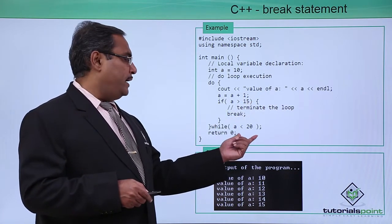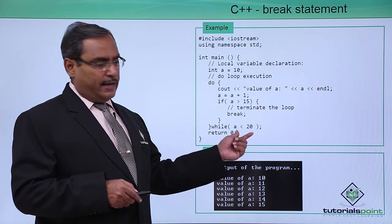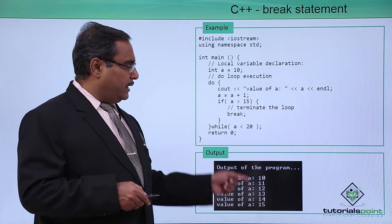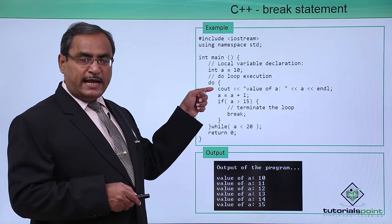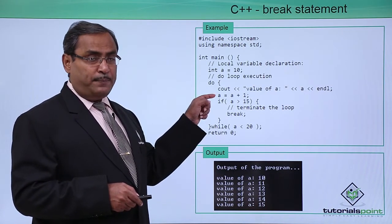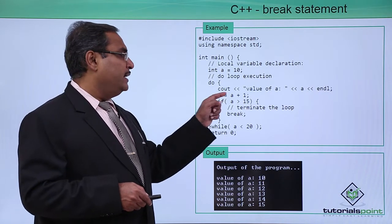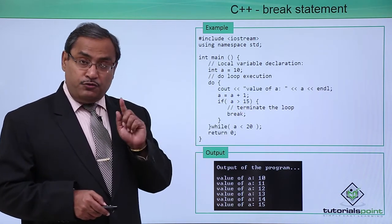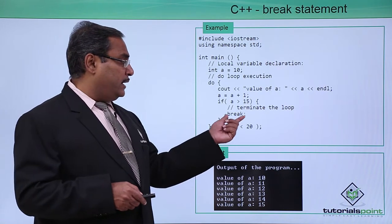Break will not get executed. Again the value of a will be tested. In this way, if you go on doing, then when the value of a will be printed as 15 like this one, then a equals a plus 1. It will become 16, 16 greater than 15 will be true. So break will get executed.